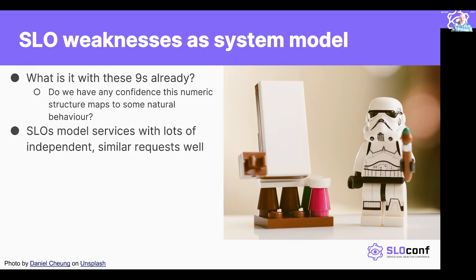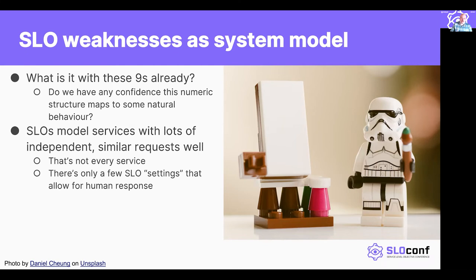The second thing to say is that SLOs and the numeric structure of SLOs really model services that have a lot of independent and similar requests quite well. If you have neither of those things, or if you have particular situations where you have a hundred requests but one of them is incredibly important, then SLOs don't really capture that — they don't allow you to wrestle with that complexity very well. And also if you've got 10 requests a month but they're all really important or they all need to be processed, SLOs are also maybe not the model for you. A consequence of that structure is the fact that there are only really a few SLO settings that allow for human response, which necessarily limits what we as humans can do with respect to SLO defense.